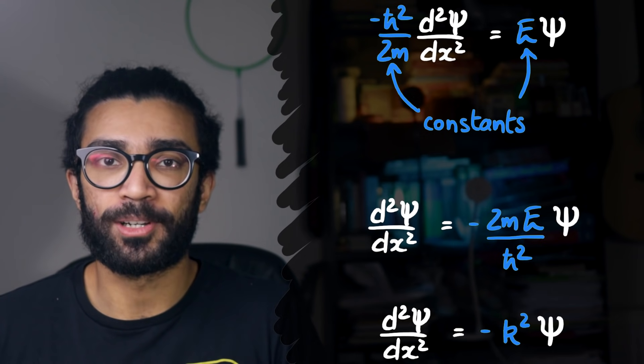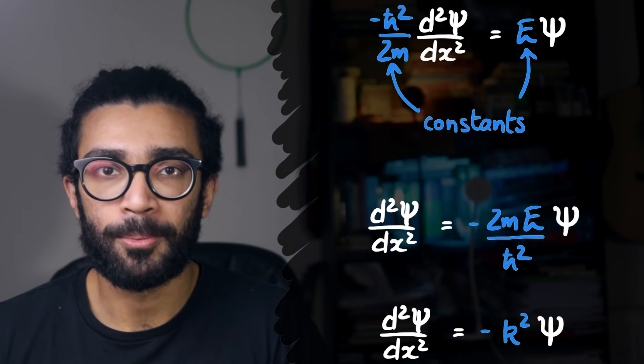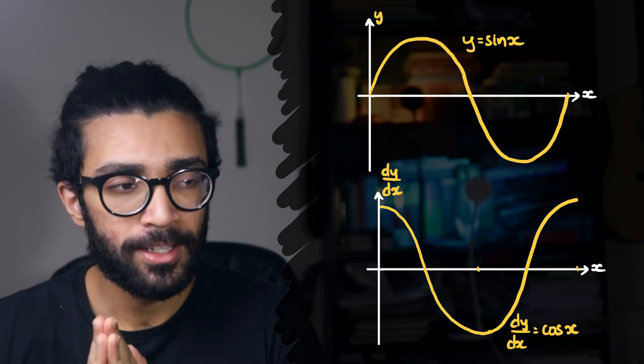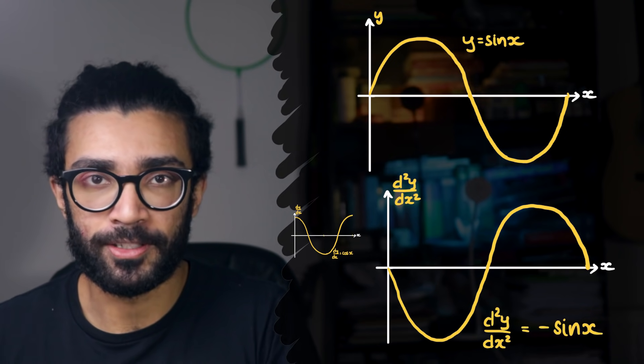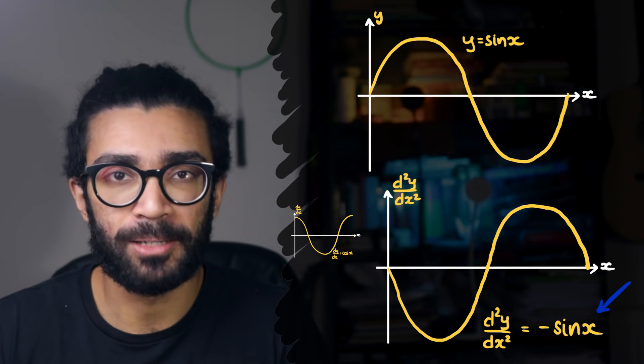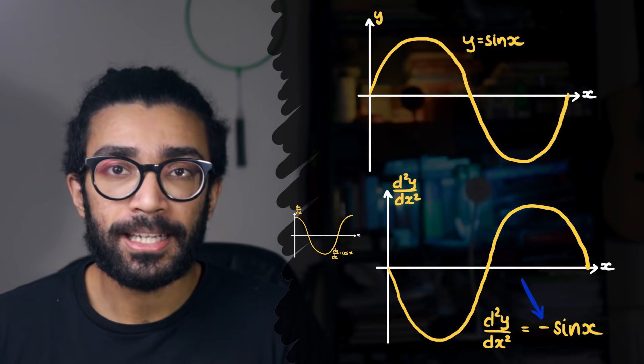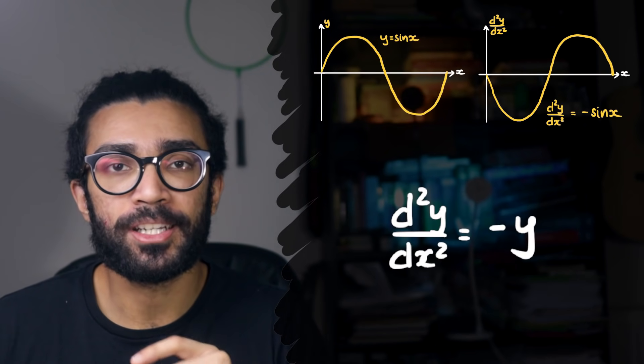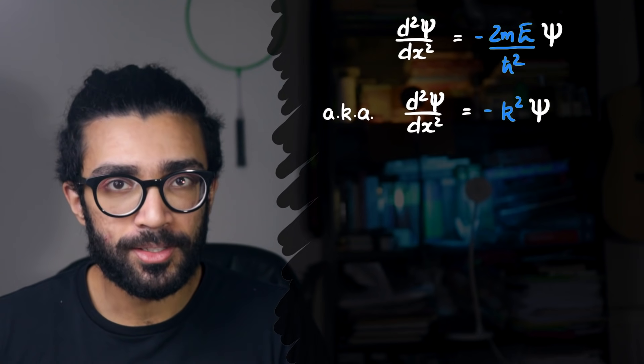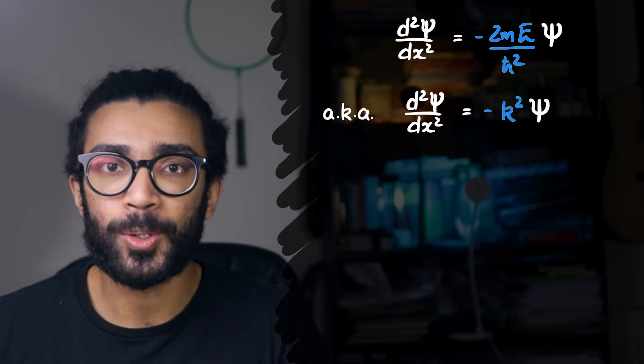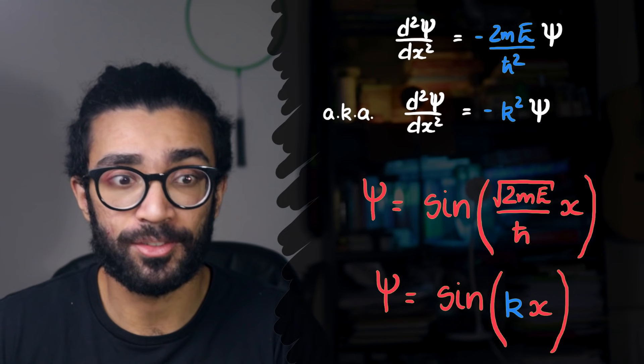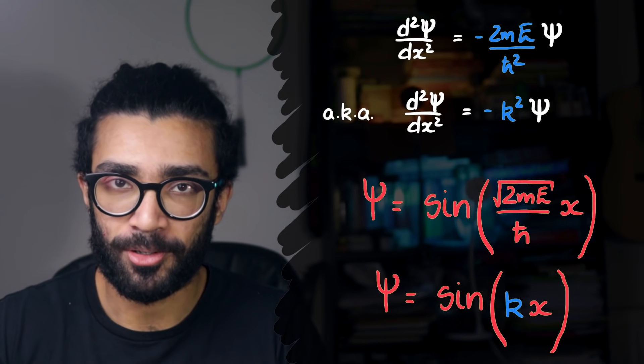Now we're trying to find a function psi that obeys this equation. And one type of function that does this really nicely is a sinusoid. Here is a diagram of y is equal to sine x. Here is its derivative dy by dx. And here is that function's derivative d2y by dx squared. As you can see, what we've got is the original function, in this case multiplied by a factor of negative one. And so what we're saying is that when you start with a sine and differentiate it twice, you still end up with a sinusoidal term. And so if we carefully account for the constants in our equation, our solution is going to look like a sinusoid. Feel free to pause the video here and have a go at differentiating this function twice to see if it really does obey the Schrödinger equation at this point.